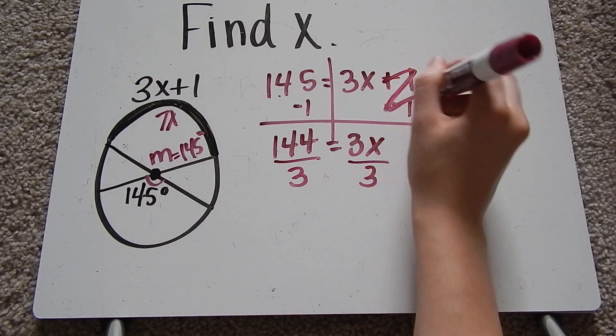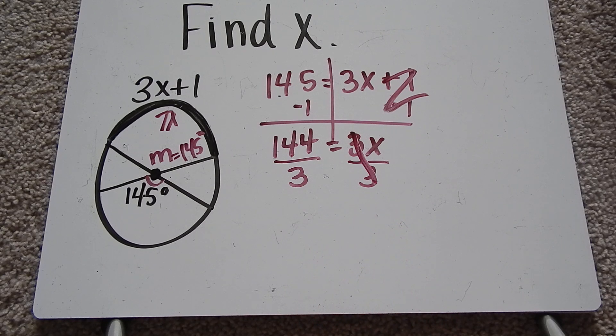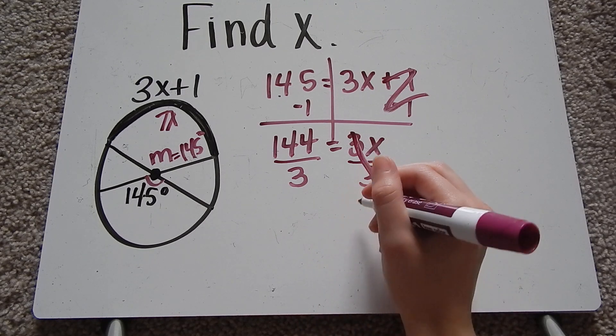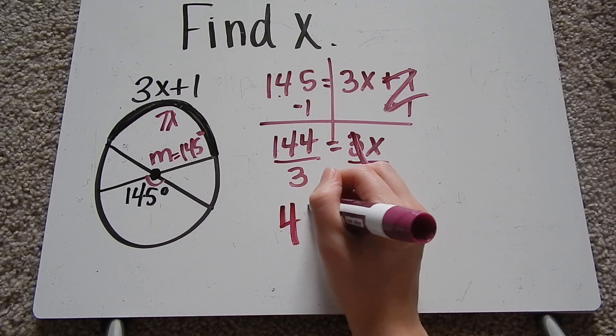By the way, these ones zeroed out, which is why they disappeared. These 3's are going to 1 out, which is why they're going to disappear. And so I get x equals 144 divided by 3 is 48.